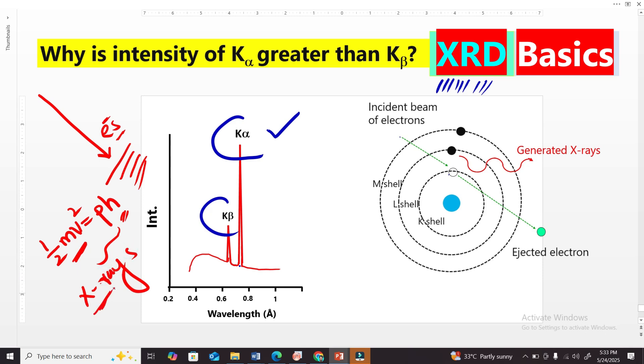But we are not interested in this type of X-ray, because these are called continuous X-rays and the intensity is very low here. We are interested in characteristic X-rays.